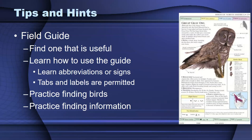For the field guide, find one that the student finds useful. There's different information in different field guides, so you just have to find one — maybe you have to go with what you have available. Help them find one that makes sense to them, and then they need to learn how to use the guide. Some kind of scavenger hunt activity might be a fun way to find different information. Help them also realize that at the beginning of the book, there may be more information about bird anatomy and physiology. Tabs and labels are permitted in the field guide.